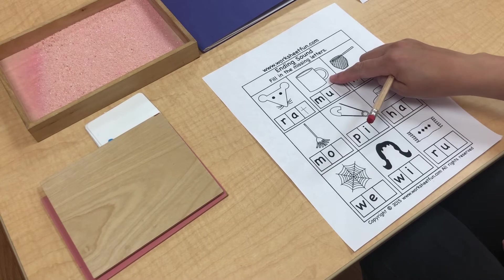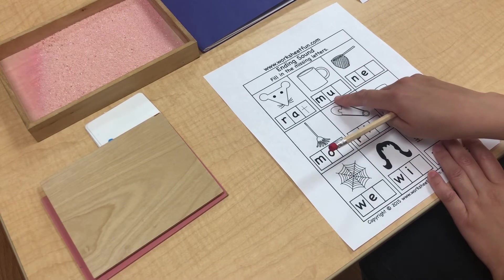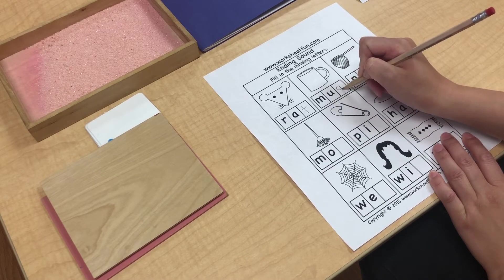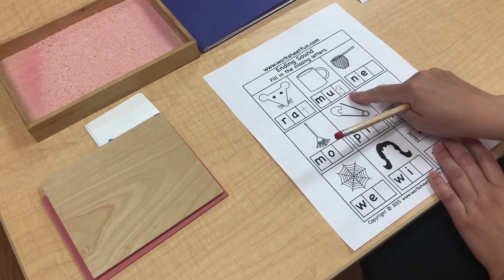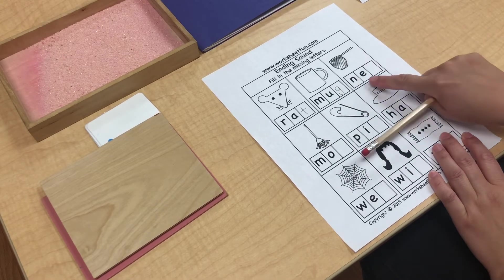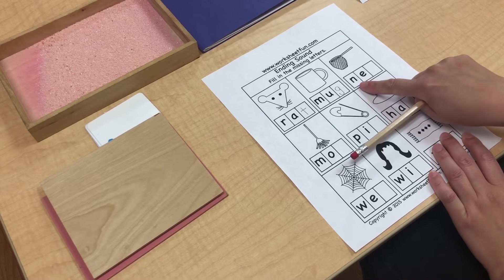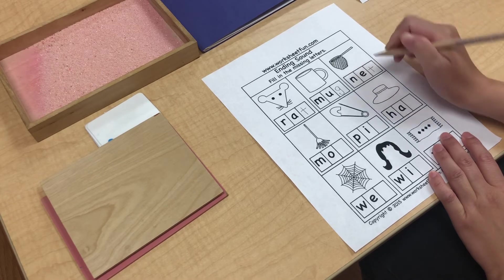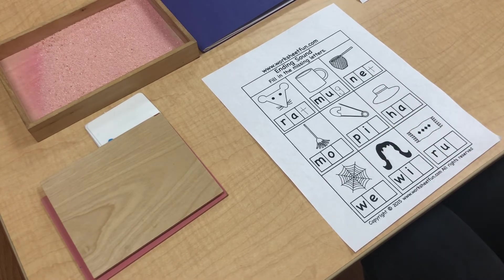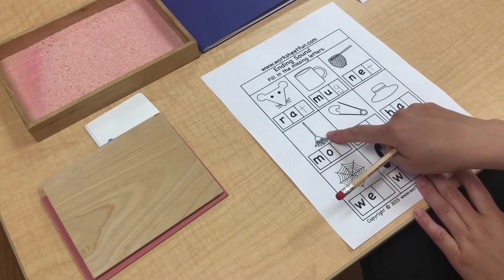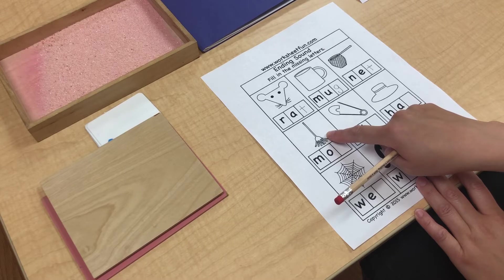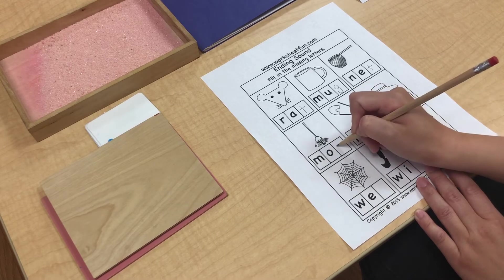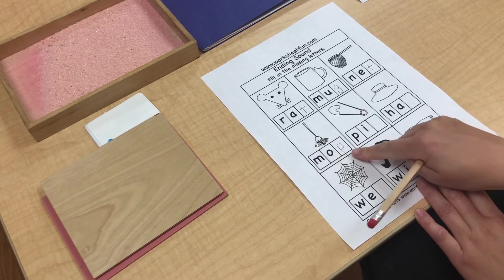Next, this is a mug. M-U-G. Mug. Net. N-E-T. Net. Next, this is a mop. Mop. What do you hear? Mop. M-O-P.